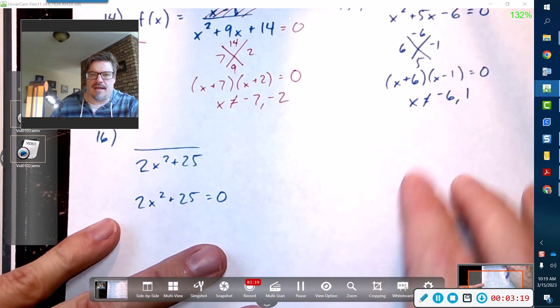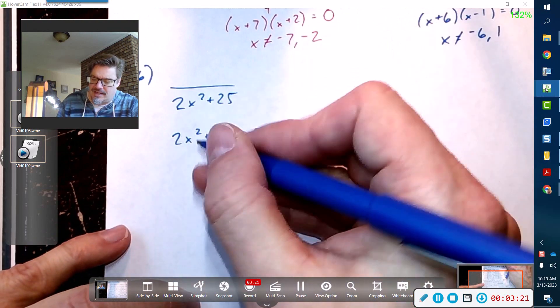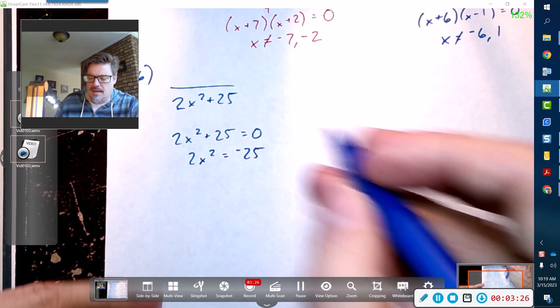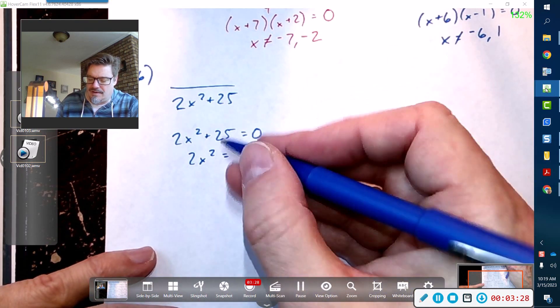Then divide by 2, but I think what you're going to find pretty quickly here is that I'm going to have to take the square root. If you tried to solve this using the quadratic formula, you would be taking the square root of a negative number.